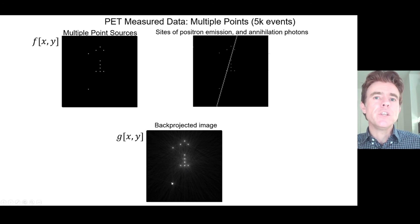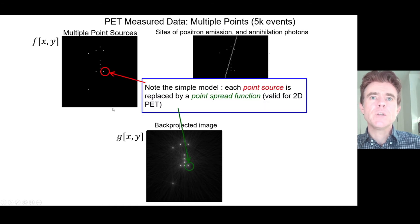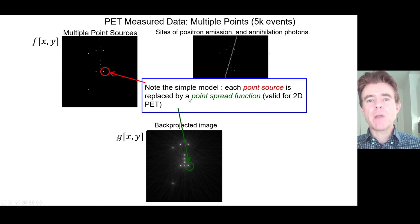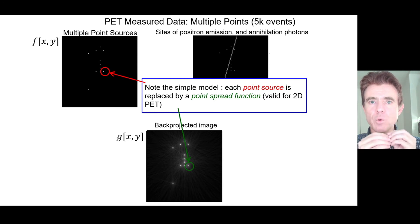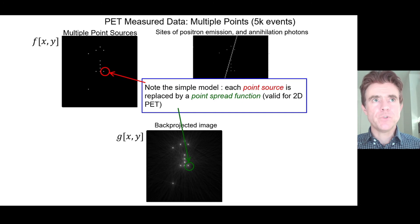They are positioned in direct correspondence to the position of each point source. Each point source has been replaced by a point spread function. If we carried on back-projecting — say a million such back-projections — you would see this very smooth, beautiful one-over-R response function, the point spread function, located at each position of each of the point sources in the function f of x, y.